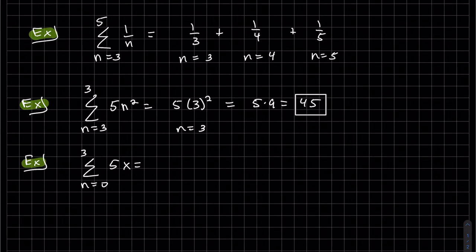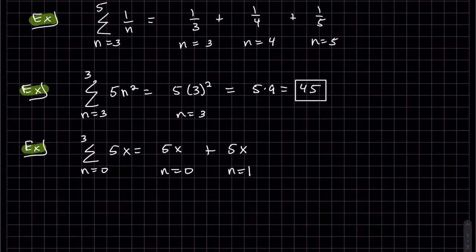So here I want us to pay attention. n equals 0 is my counter but there is no n here. So for n equals 0 it's 5x plus n equals 1. The counter continues. It's still 5x though. That's not changing. x is a different variable than our counter n so it doesn't get substituted. So our answer is 20x.